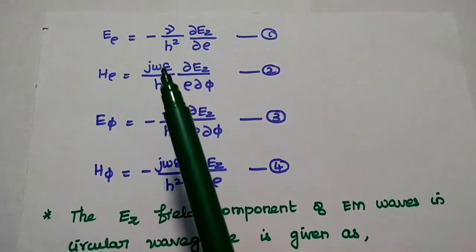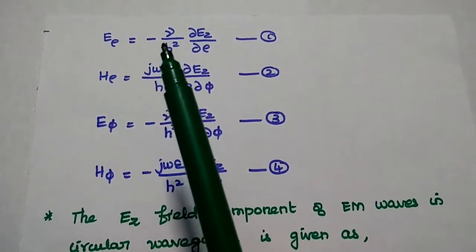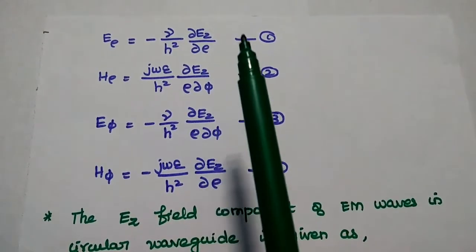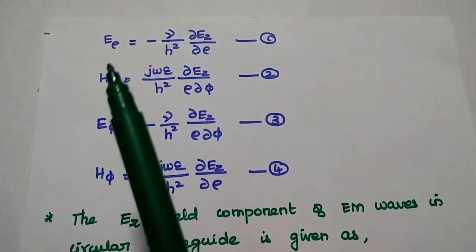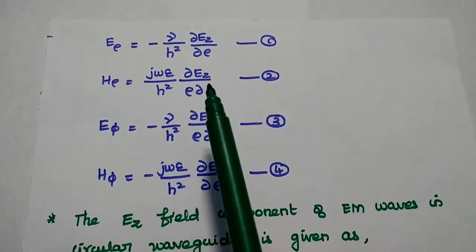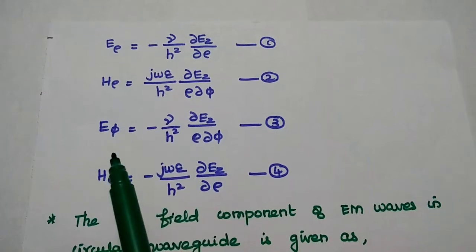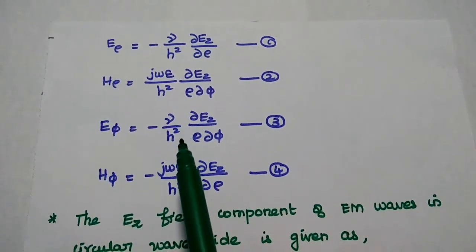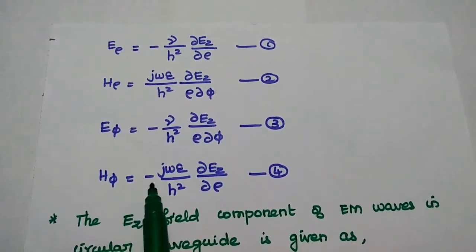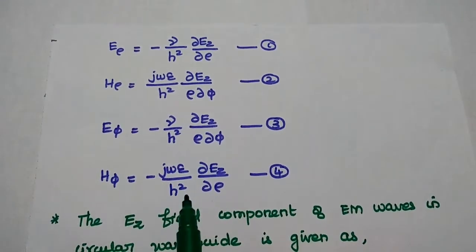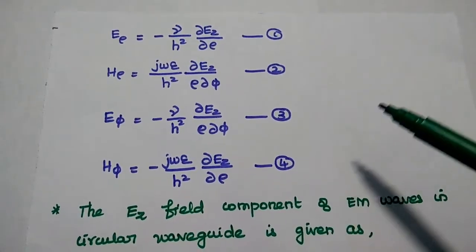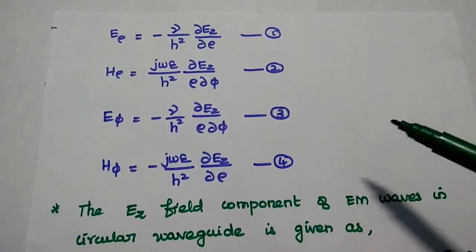Then we can get the expressions as: E rho is equal to minus gamma by H square, dou EZ by dou rho — that is the first equation. Similarly, H rho is equal to J omega epsilon by H square, dou EZ by rho dou phi. E phi is equal to minus gamma by H square, dou EZ by rho dou phi. And H phi is equal to minus J omega epsilon by H square, dou EZ by dou rho. These are the field components for TEM waves.